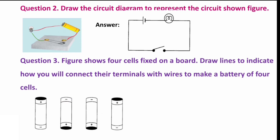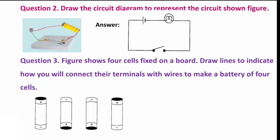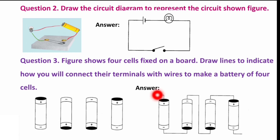Next question: figure shows four cells fixed on a board. Draw lines to indicate how you will connect the terminals with wires to make a battery of four cells. We need to connect four cells so they form a battery. One positive terminal of one cell should be connected to the negative of the other. In the answer, you can see the connections are of opposite polarities — negative to positive throughout.